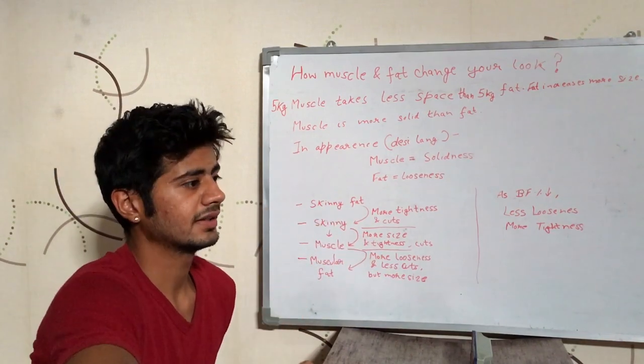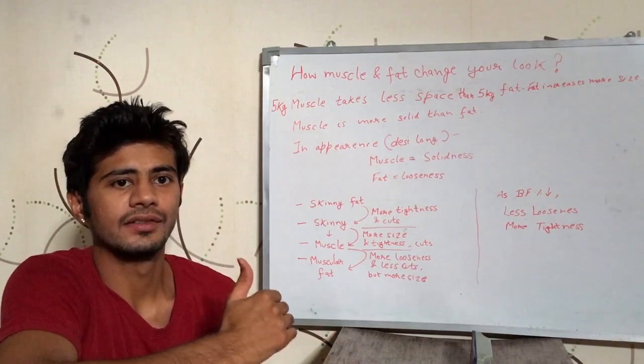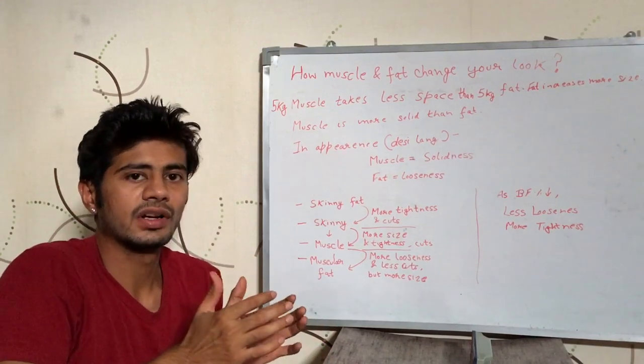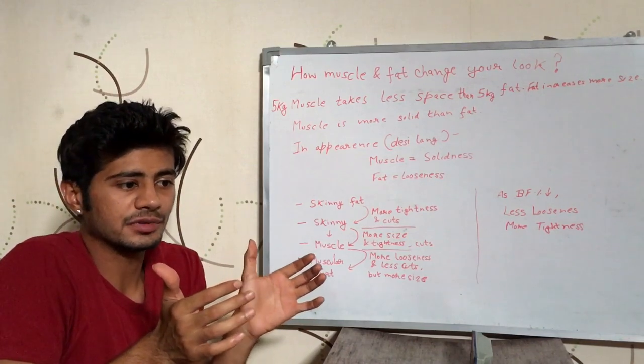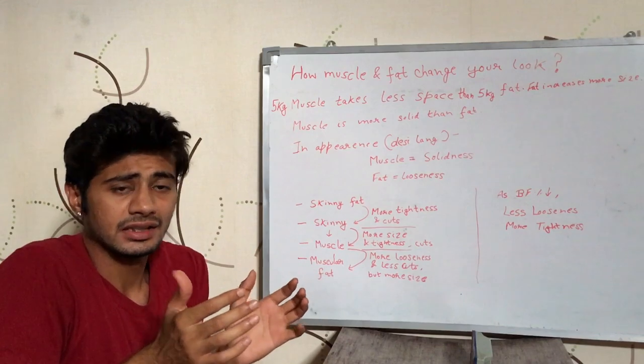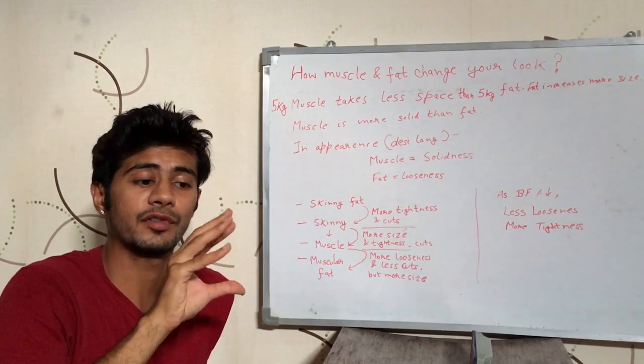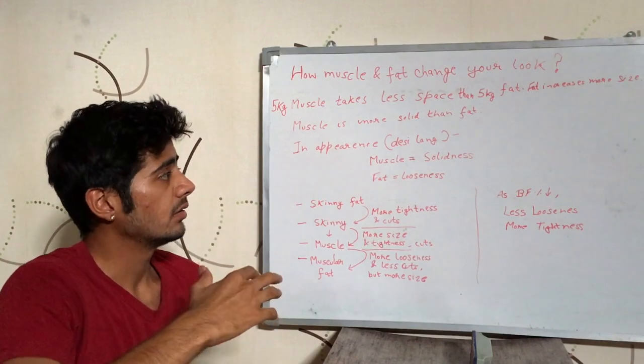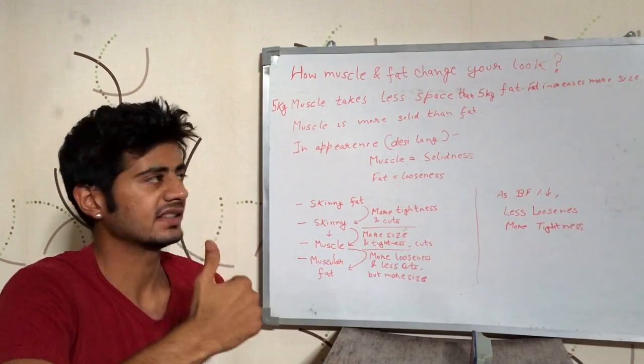First of all, understand this, that muscle takes less space than fat. So if there is 5 kilograms of muscle, let's say it takes this much space, 5 kilograms of fat would take this much space. Similarly, if 1 kilogram of fat would take this much space, muscle is more dense than fat, muscle takes less space than fat.